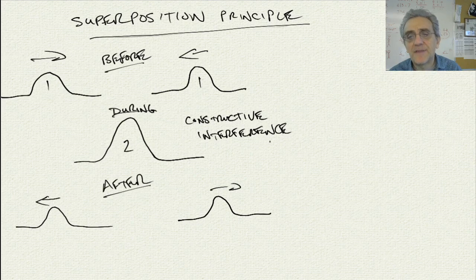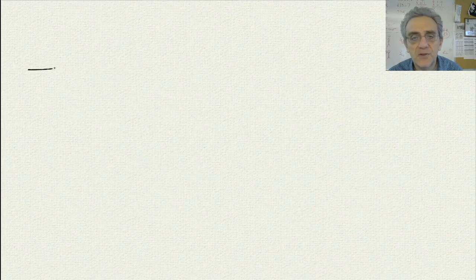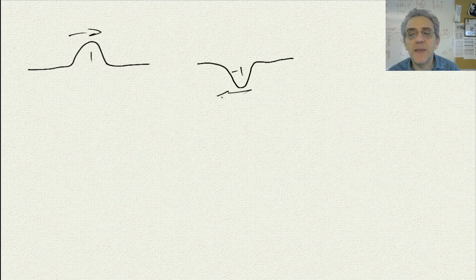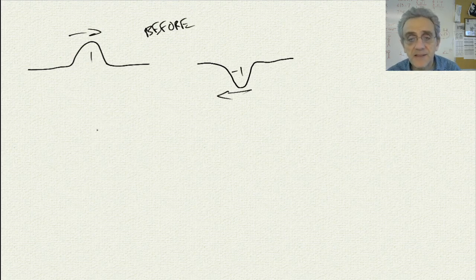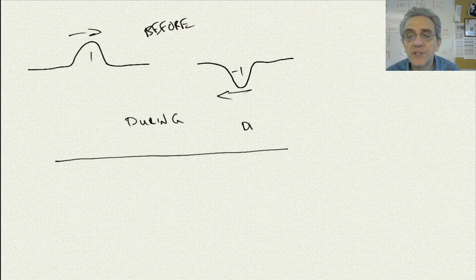Now, the other type of interference is called destructive, and I think you know what that's going to look like. We have one wave coming in with amplitude positive one, and another wave coming in with amplitude of negative one, and they're going to meet each other in the middle. In this case, during interference, we have no amplitude - in other words, they cancel each other out - and this is called destructive interference.